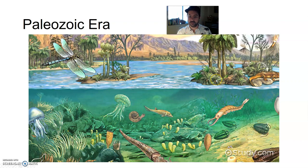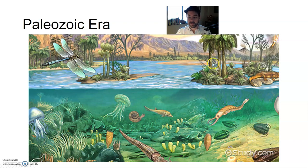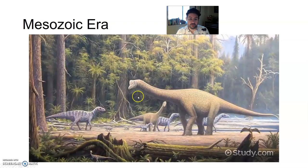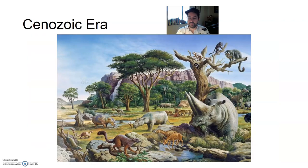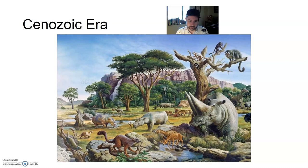The Paleozoic era — ancient life — featured mostly stuff in the oceans: trilobites, ammonites, corals, squids, some plant life, very early amphibians and reptiles, and a lot of bugs. The Mesozoic — middle life — was kind of the age of the dinosaurs, when reptiles were the main organism on Earth. Then the Cenozoic, the era we're in, is when mammals thrived and began to dominate after the dinosaurs went extinct. The Cenozoic is marked by the rise of the mammals.